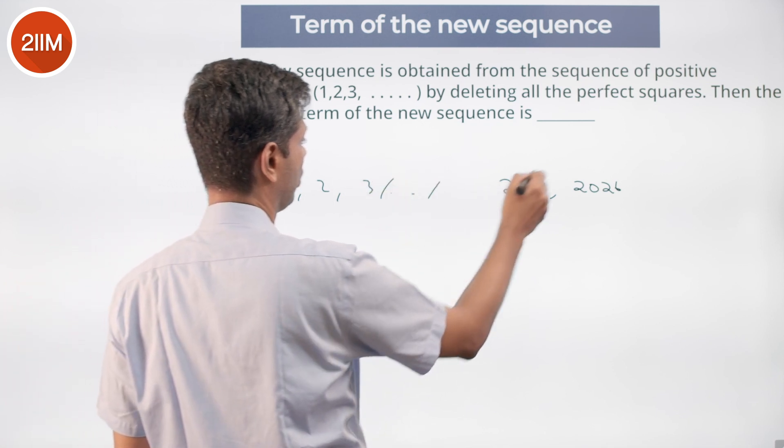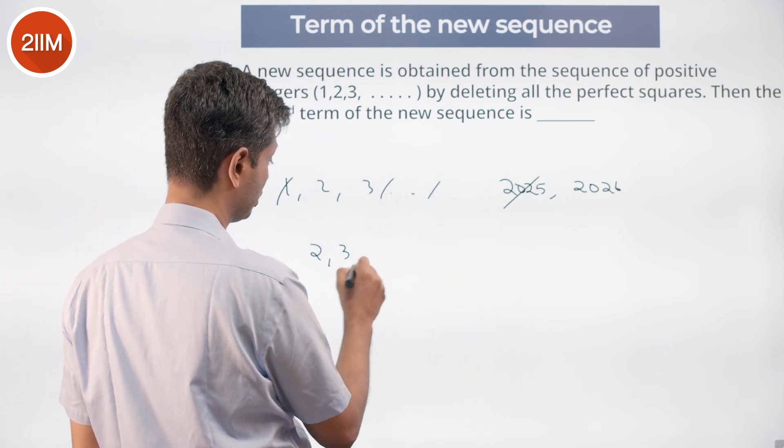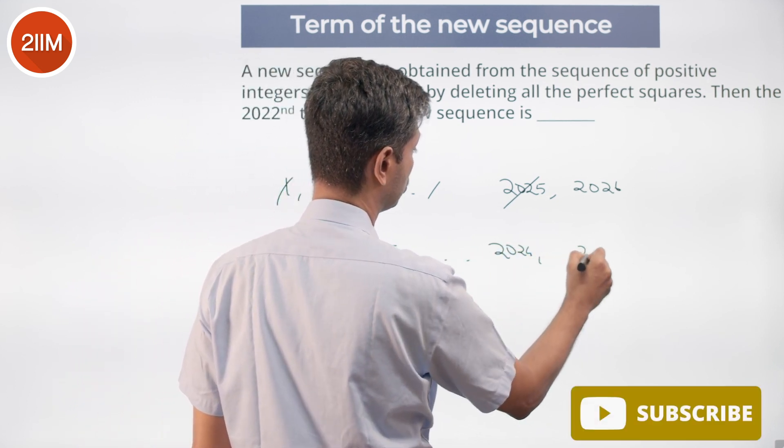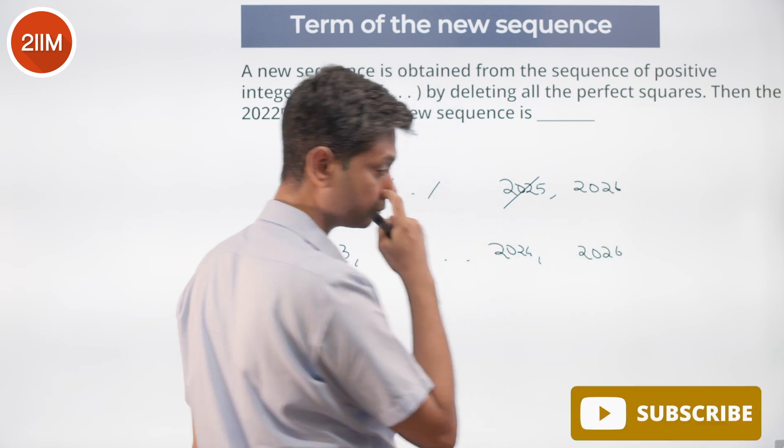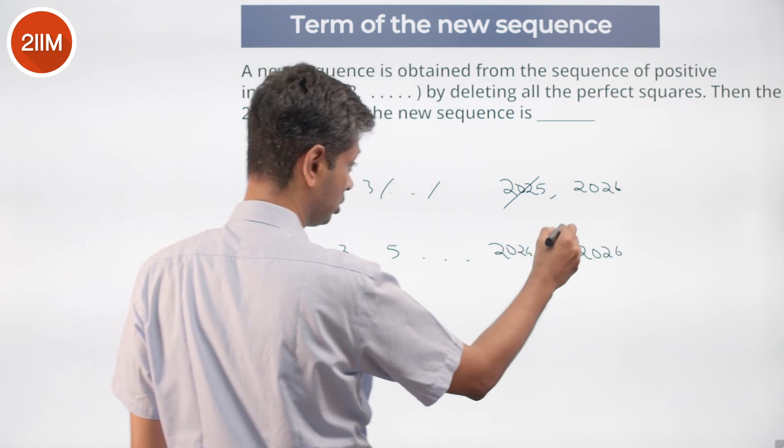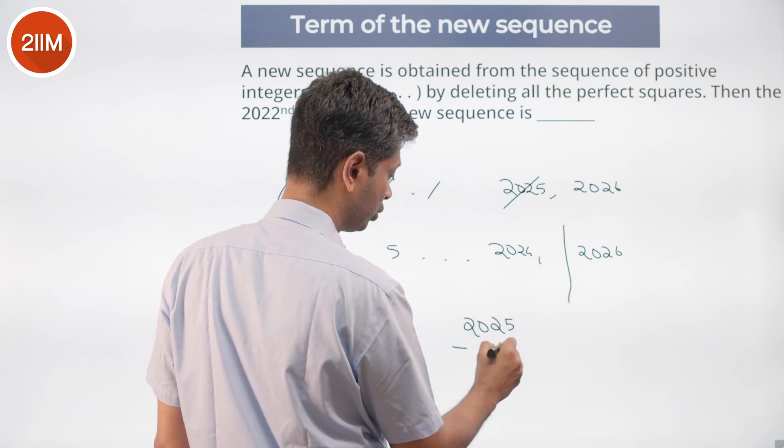Of which 1, 4, 9, all of these will disappear. My new sequence will have 2, 3, 5, up to 2024, 2026. Up to this number, I will have 2025 minus 45 terms.